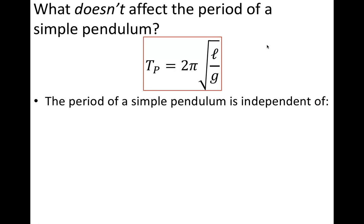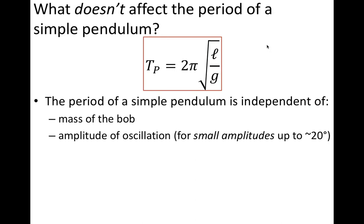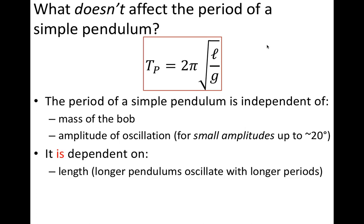So what does and doesn't affect the period of a pendulum? Well, it does not depend on the mass of the bob. All pendulums of the same length will have the same period. It also doesn't depend on the amplitude, as discussed on the last slide, as long as we are looking at amplitudes that are small. However, it is dependent on the length of the pendulum, and it is dependent on the strength of the gravitational field.